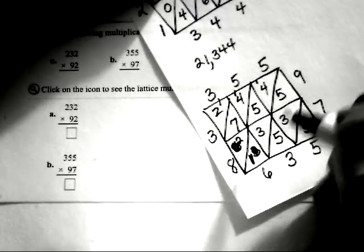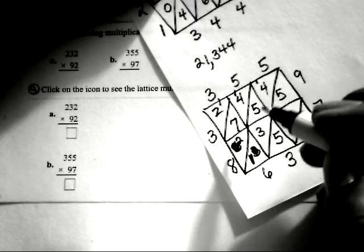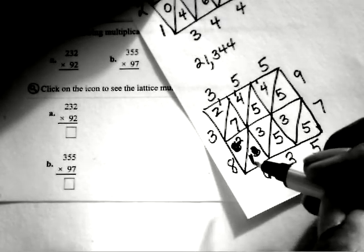So that means this will be correct. Let's see, that's 5, 10, 13, 14. Write your 4, regroup with the 1.